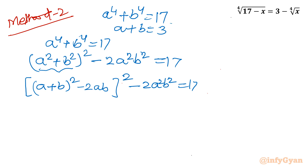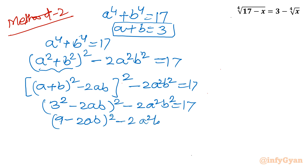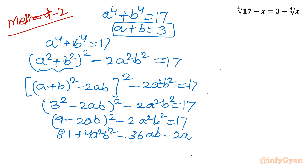Substituting a plus b equal to 3 gives [9 minus 2ab]² minus 2a²b² equal to 17. Expanding: 81 plus 4a²b² minus 36ab minus 2a²b² equal to 17. Collecting terms gives the quadratic in ab: 2a²b² minus 36ab plus 64 equal to 0, which simplifies to a²b² minus 18ab plus 32 equal to 0.